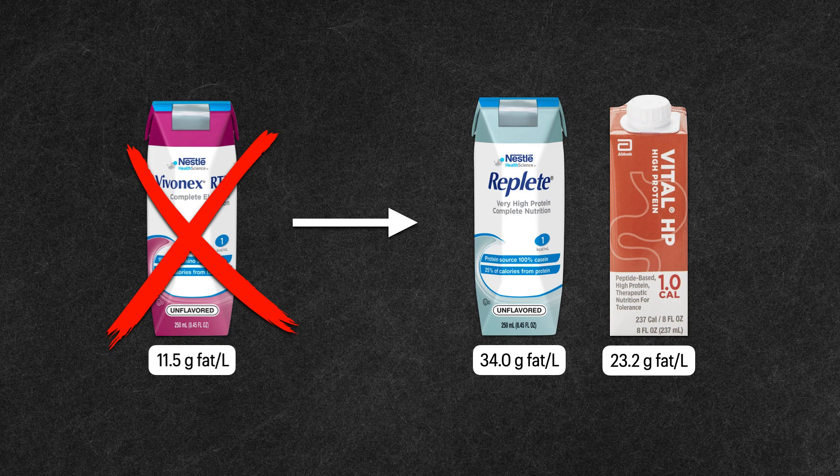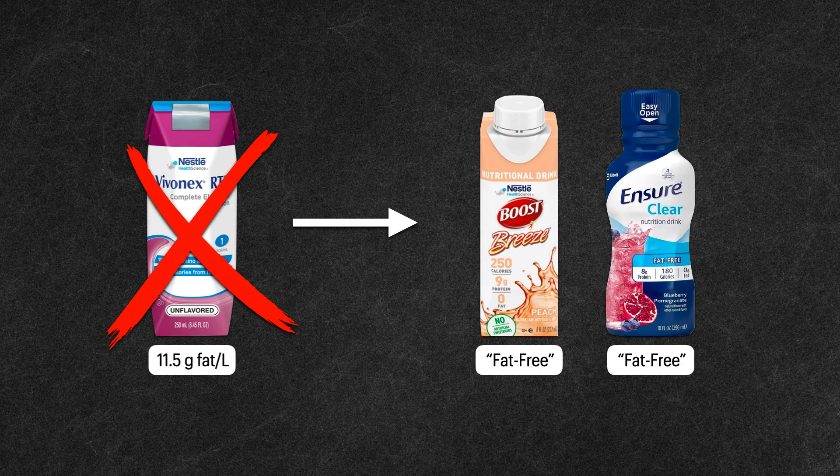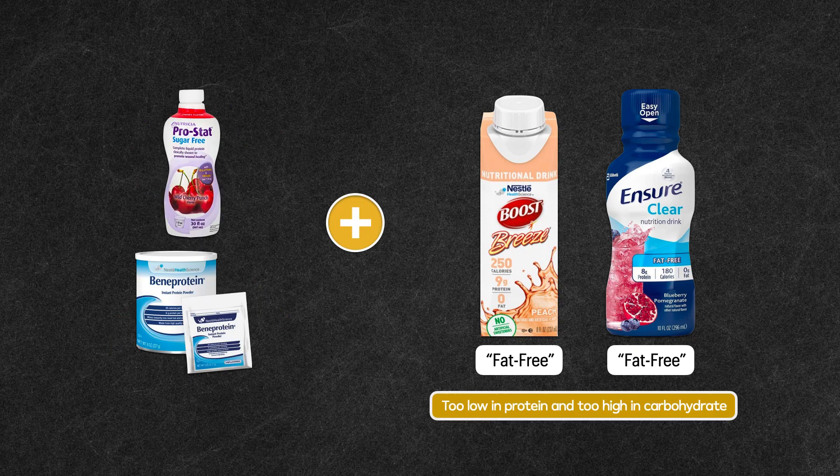If Vivonex isn't available, or there's a delay due to the need for it to be shipped to the facility, a fat-free oral supplement like Ensure Clear or Boost Breeze can be safely administered through a feeding tube. However, I find these products are too low in protein and too high in carbohydrate to be a sustainable alternative, and always need to be paired with a protein modular.